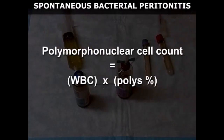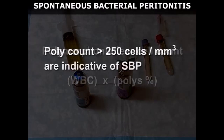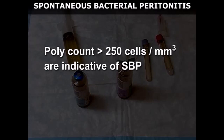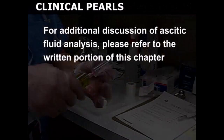To rule out spontaneous bacterial peritonitis, calculate the ascitic fluid polymorphonuclear count by multiplying the total white cell count by the percentage of polys in the differential. Values greater than 250 cells per cubic millimeter are indicative of SBP. For additional discussion of ascitic fluid analysis, please refer to the written portion of this chapter.